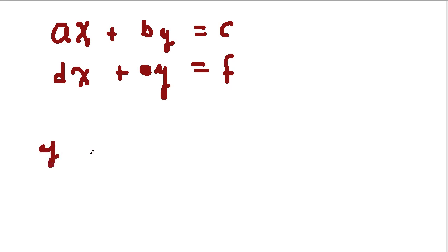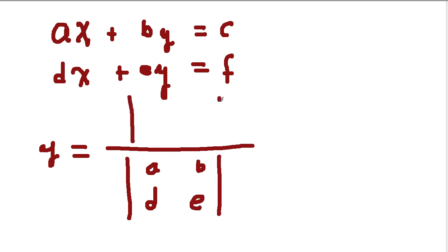Y is equal to, and then in the denominator, I just put the determinant A, B, D, E. And in the numerator, since I'm solving for Y, I put the determinant A, D, C, F. So when I evaluate these two determinants...